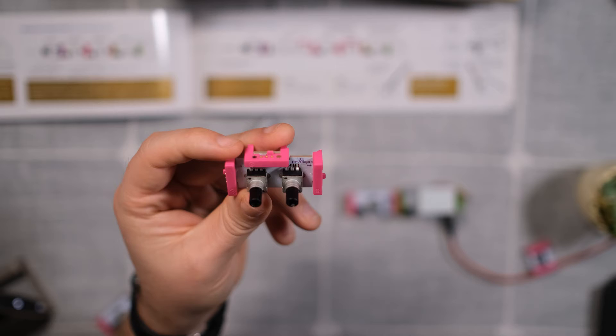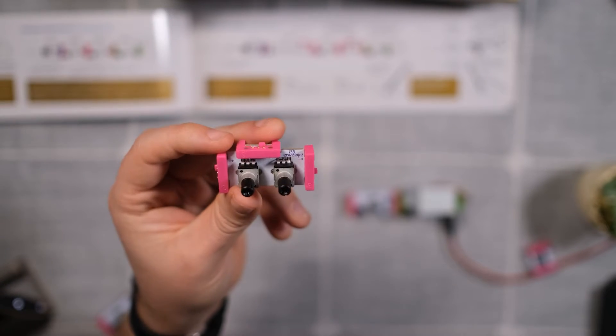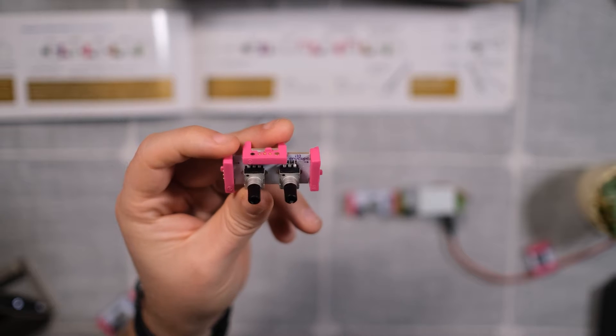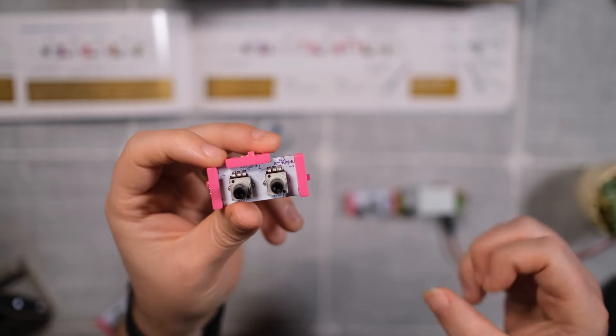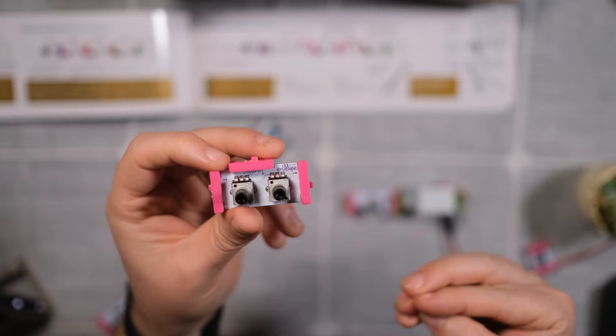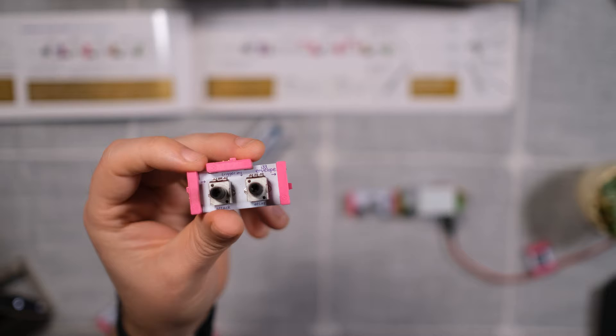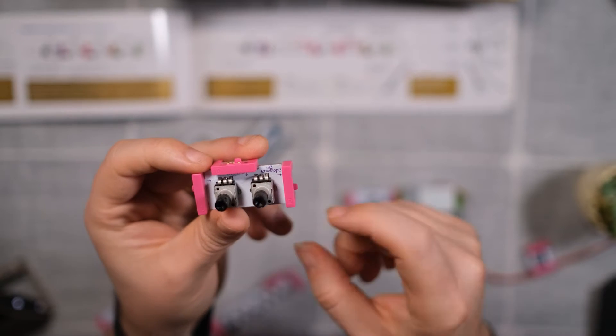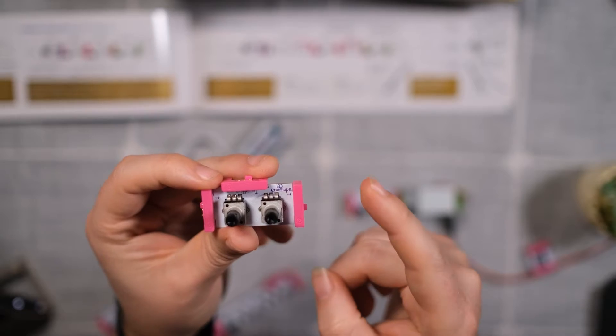So in a real modular synth, you would usually use an envelope together with an amp. An amp defines the volume of the signal, and the envelope will define the curve or the shape and speed of the volume. But in this little bits kit, you don't have an amp, because the amp is built into the envelope as well. So that kind of makes it simpler.